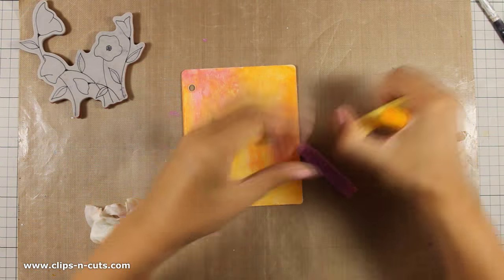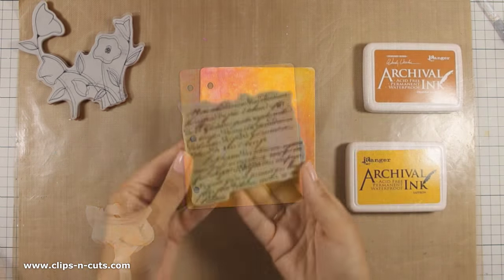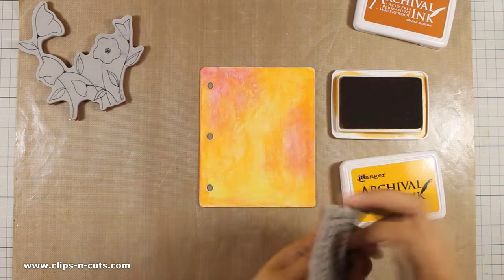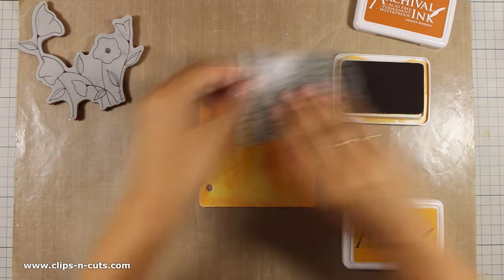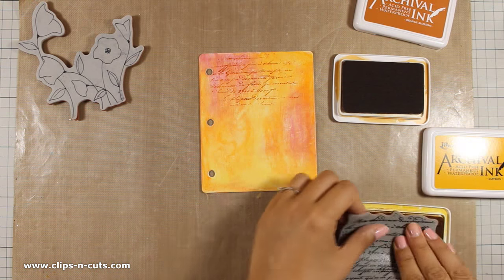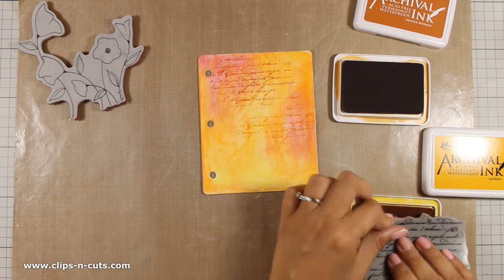Now that I've finished applying color on my background, I'm going to go ahead and stamp some script. You can use any script stamp that you have on hand, and as you can see, I'm using two different archival inks.